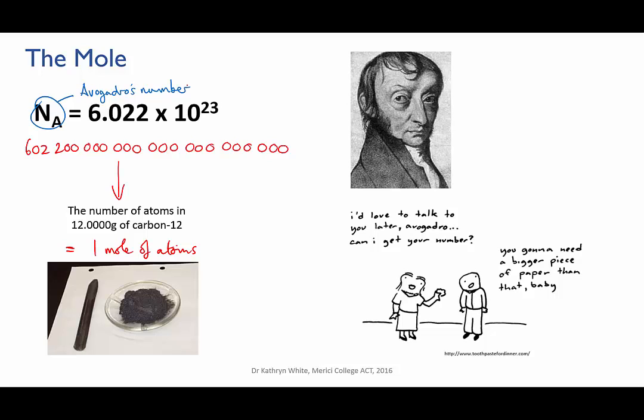Amadeo Avogadro was an Italian lawyer in the early 1800s. He became interested in mathematics and physics, and in 1820 he became the first professor of mathematical physics in Italy. He came up with a hypothesis that equal volumes of different gases at the same temperature and pressure contain the same number of particles, and this laid the basis for the gas laws that we'll look at in another part of the course.